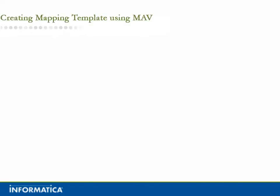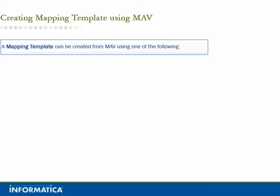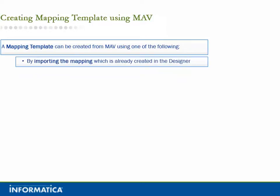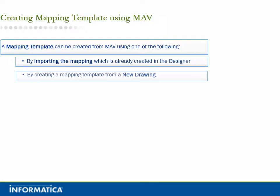Creating a Mapping Template using MAV. A mapping template can be created from MAV using one of the following: by importing the mapping which is already created in the designer, or by creating a mapping template from a new drawing.